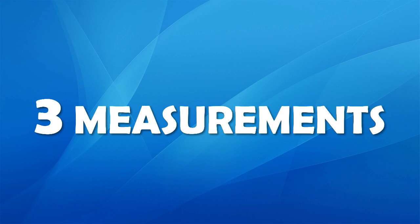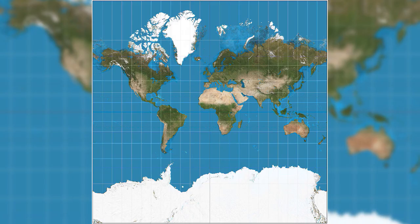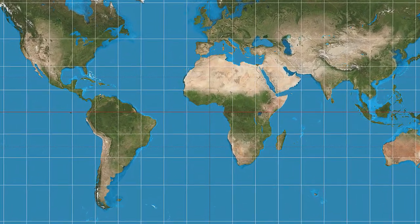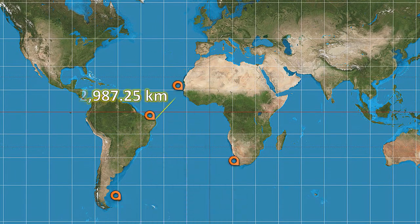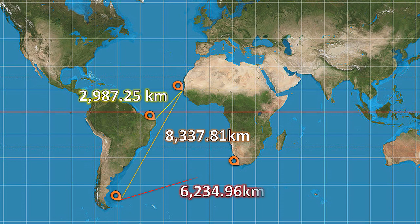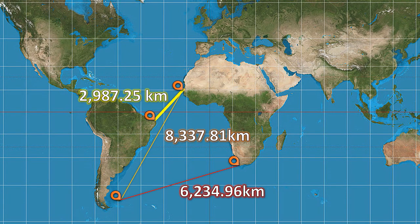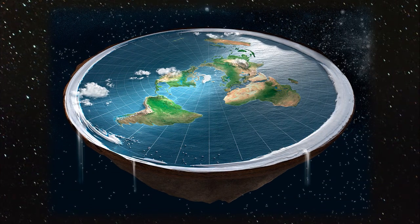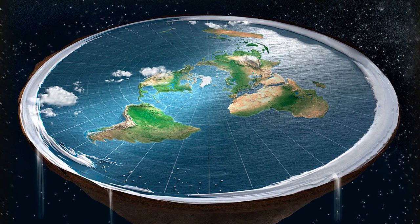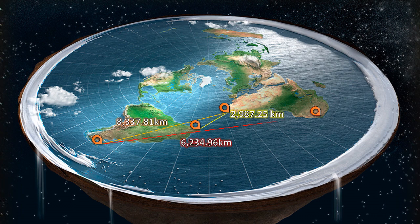Now, back to the three measurements we took earlier. On the Makeda projection, we have three consistent measurement lines of logical lengths. The longest line is the greatest distance, and the shortest line is the shortest distance. But let's look at the flat Earth model. Once these measurements are superimposed, we can see that the three measurement lines are anything but consistent or logical.